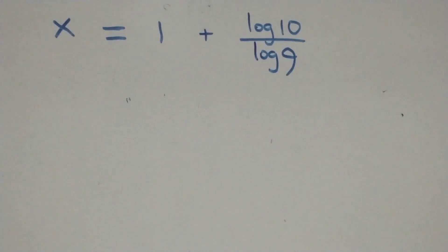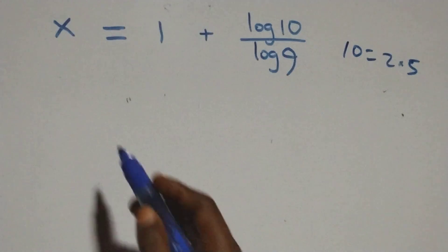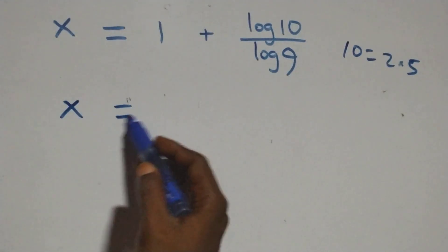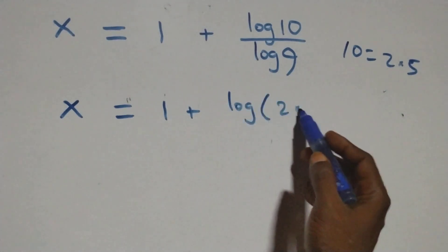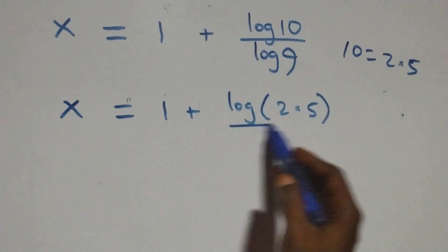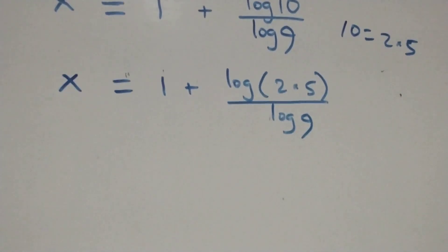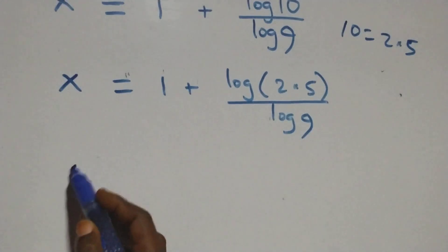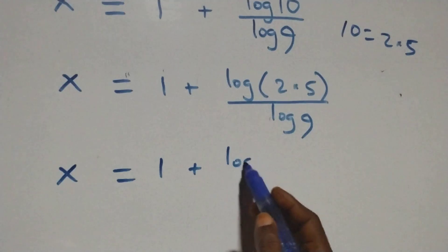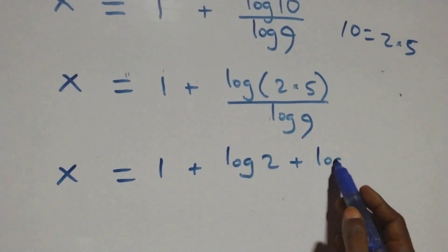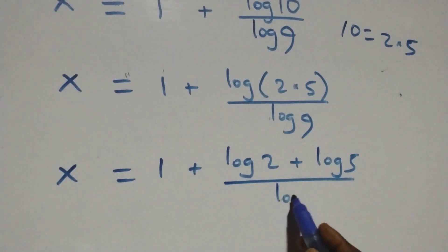Then here, 10 can be written as 2 times 5. So what we have becomes x equals to 1 plus log(2 times 5) over log 9. This also follows the logarithm product rule, and we have x equals to 1 plus (log 2 plus log 5) over log 9.